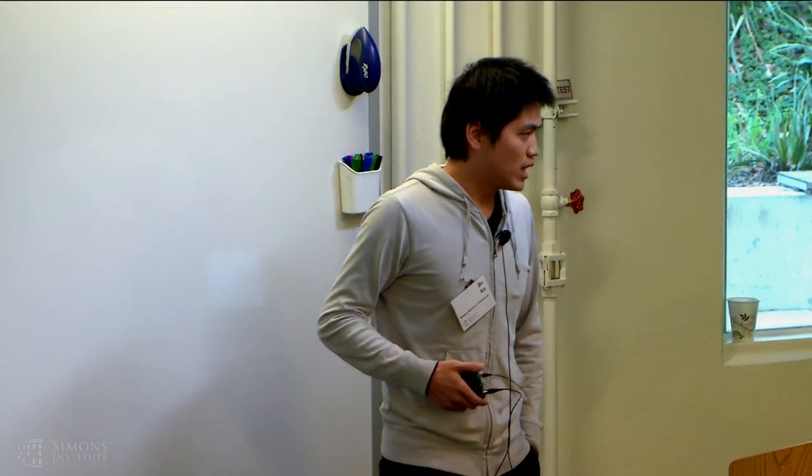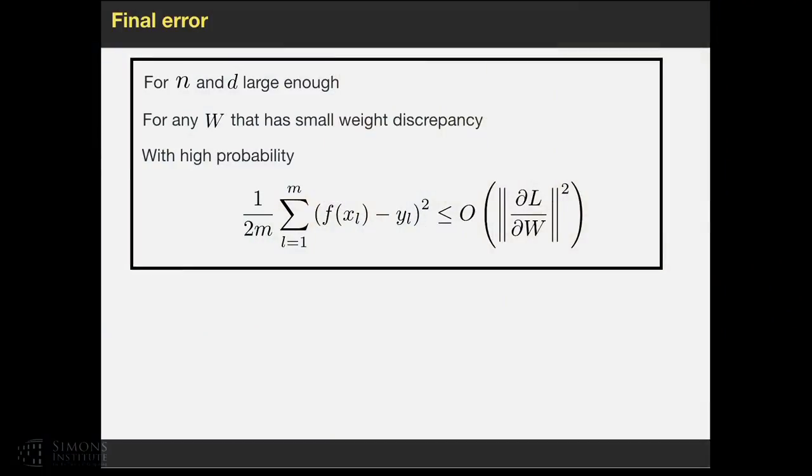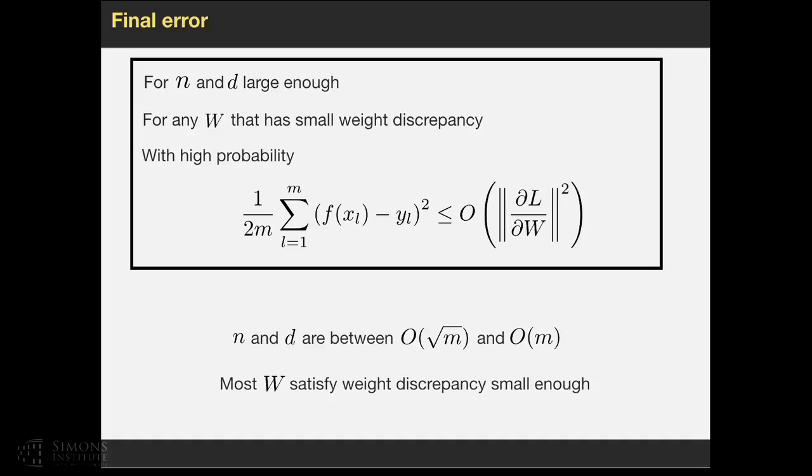To get the final error, using the same assumptions, we can have a bound on the training error which is on the square root norm of the gradient. So if you have a small gradient, then we have a small error. To talk a bit more about this W business: most W would actually satisfy this low discrepancy. But there's one point that we are not sure yet. If the solution obtained by gradient descent, or any other optimization algorithm, actually has a small weight discrepancy, that's still a gap.